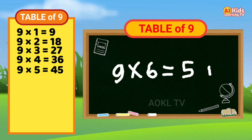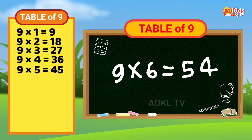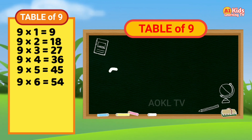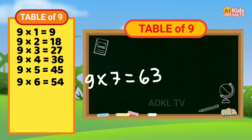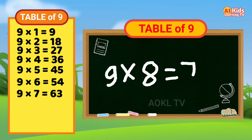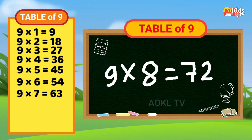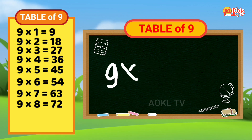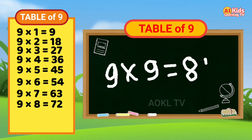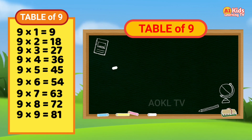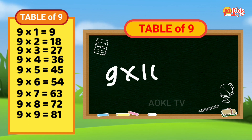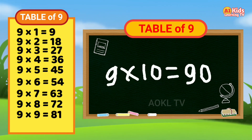Nine six's are fifty-four. Nine seven's are sixty-three. Nine eight's are seventy-two. Nine nine's are eighty-one. Nine ten's are ninety.